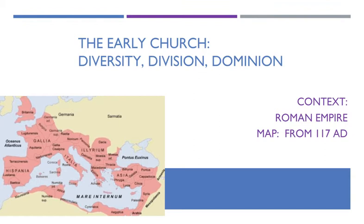The early church: diversity, division, dominion. This is the title of chapter 2 in our textbook by Rebecca Moore. I'll have more to say about each of the D words in a bit. What I want to talk about here is the geographic context. All of the authors of our primary texts from this period lived within the Roman Empire, which controlled all the territory around the Mediterranean Sea for centuries. This particular map marks the limits of the empire in the year 117, but it's pretty much the same through the vast majority of the early period that we are studying.